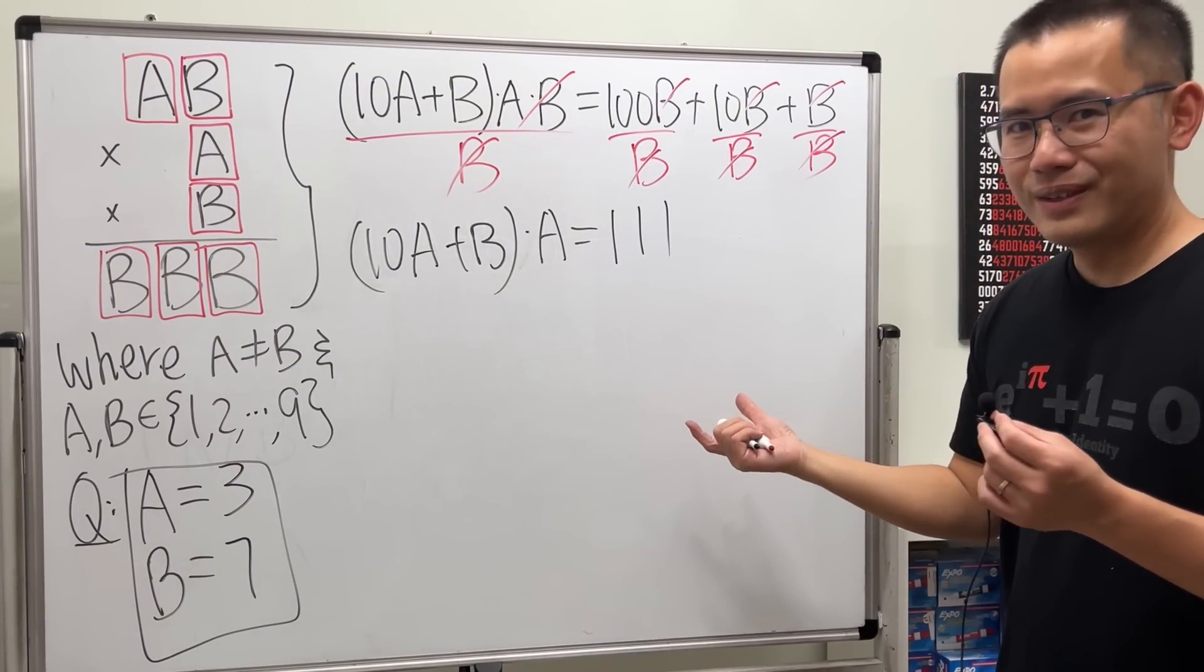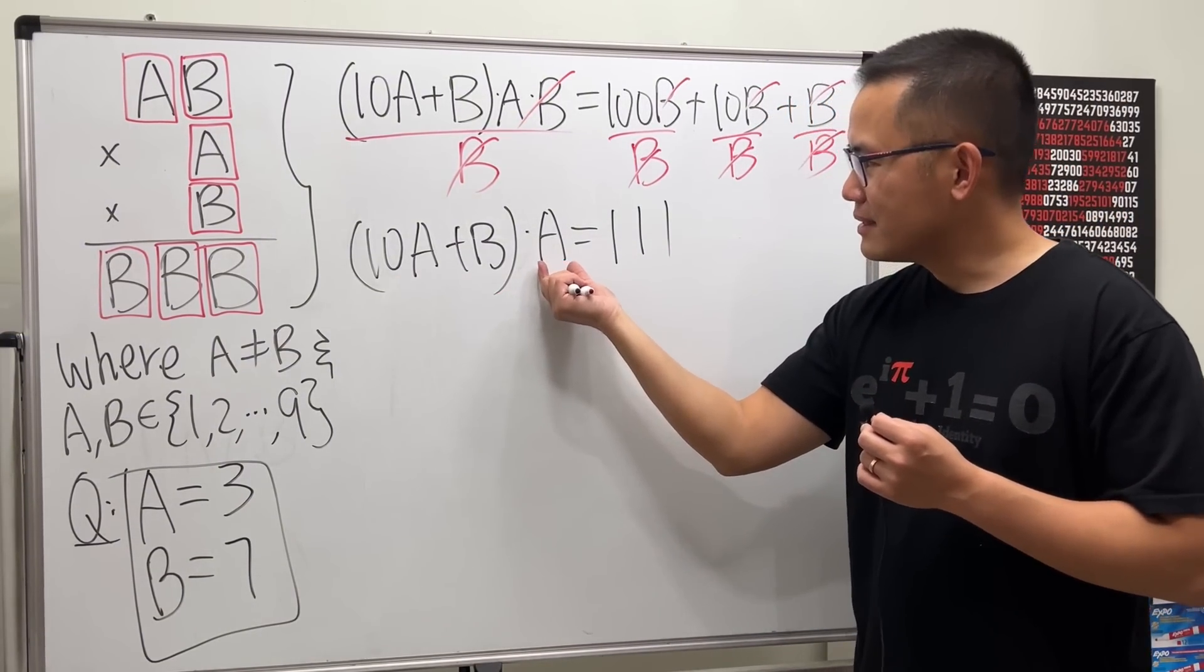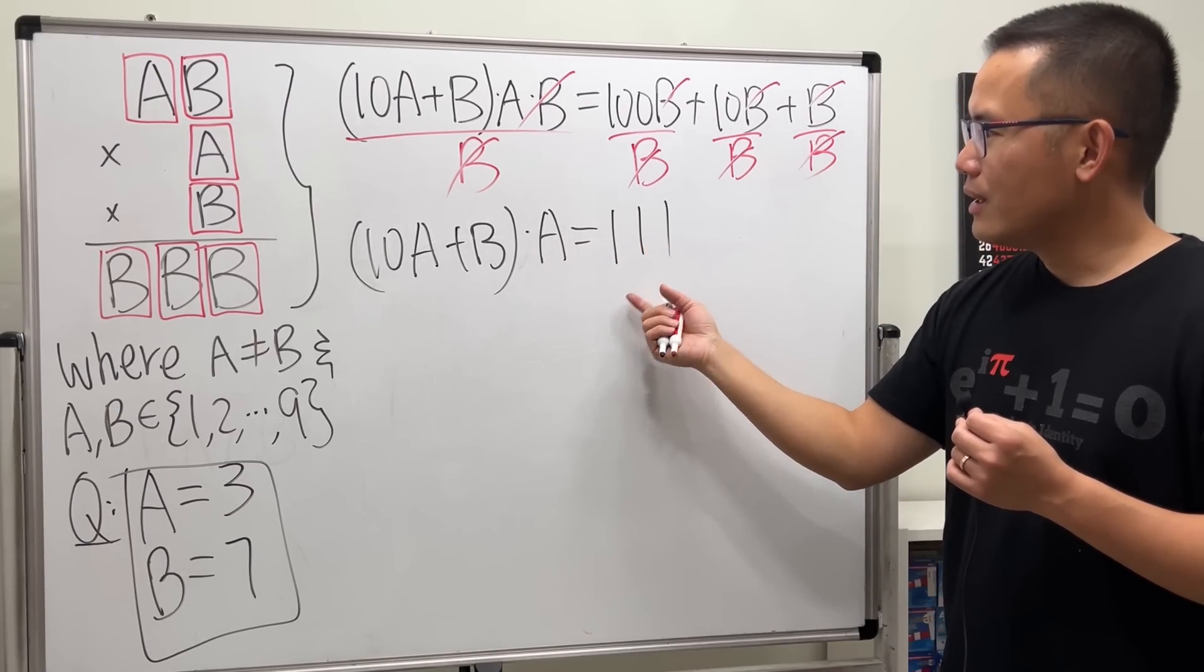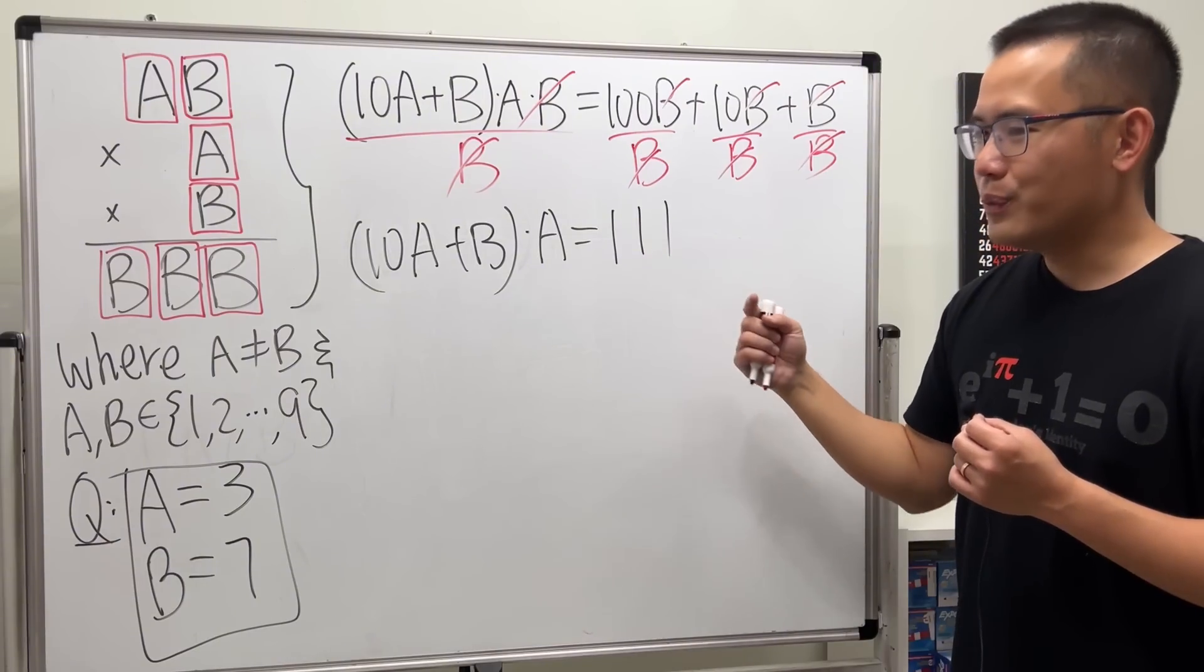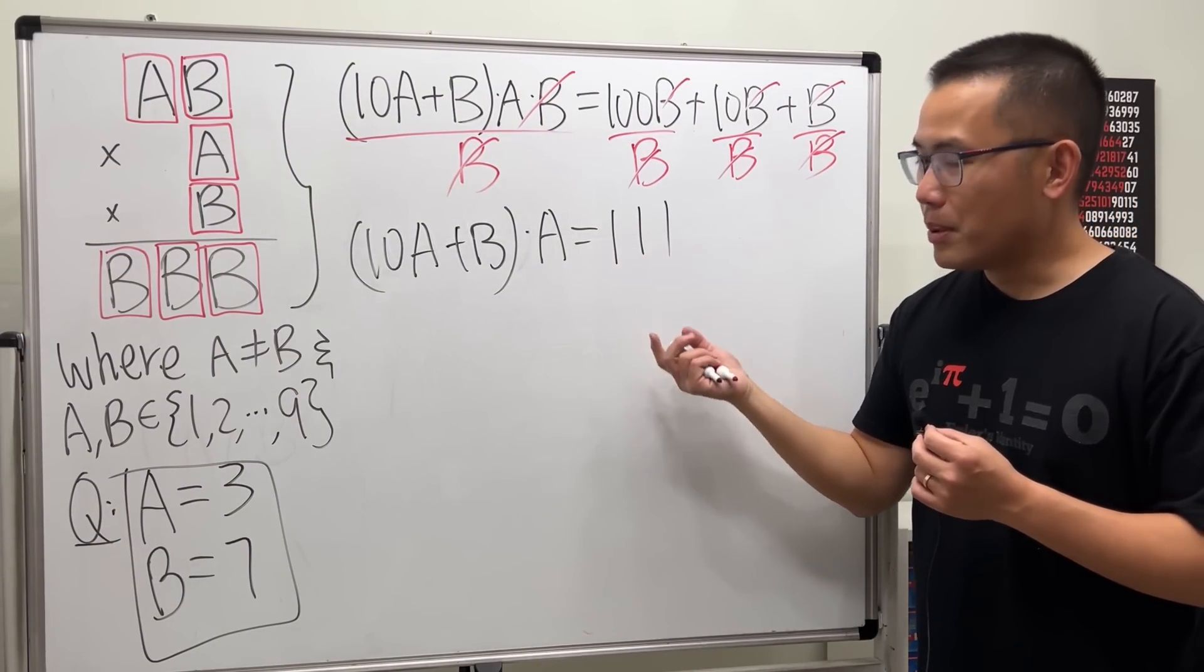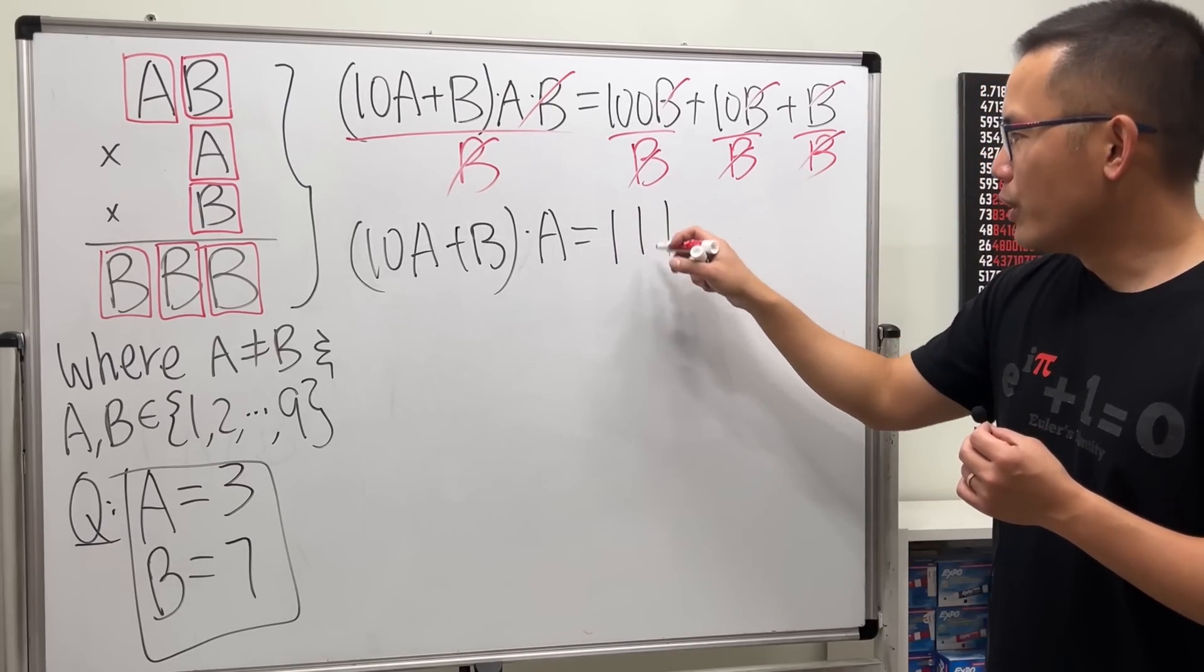Now what do we do? We have this quantity times this one, it's equal to a three-digit number. Notice when we add 111, the digit sum is a multiple of three, so that means the number itself is also a multiple of three. And in fact, if we break it down, 111 is equal to 3 times 37.